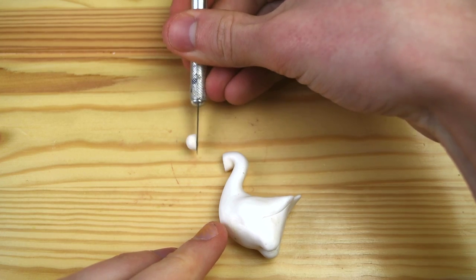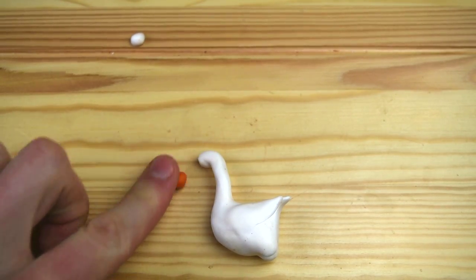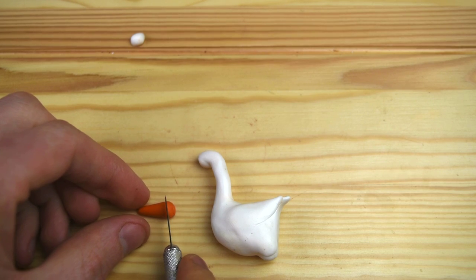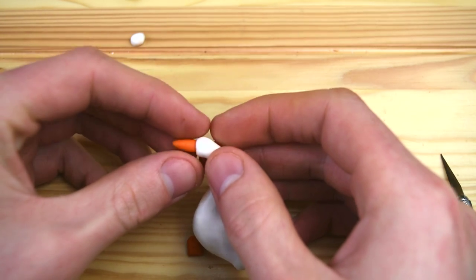Now we'll cut off the head here to put on the beak. This is some orange clay, but the orange clay out of the pack was a bit bright, so I mixed together some black with it.